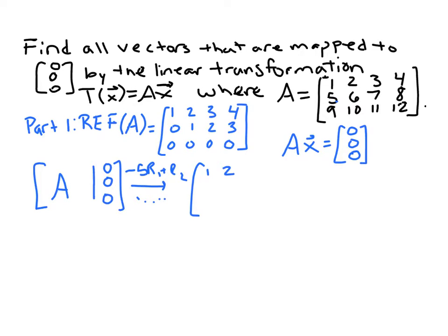So we could just use the row reduction that we did in part 1. So I'm going to go straight to this form here and then just change the constant column to this row of zeros.